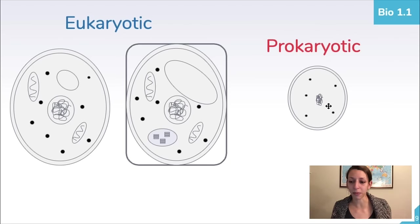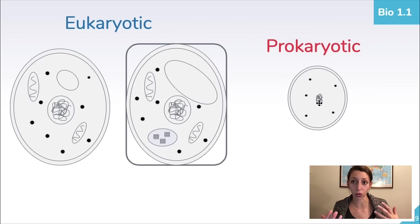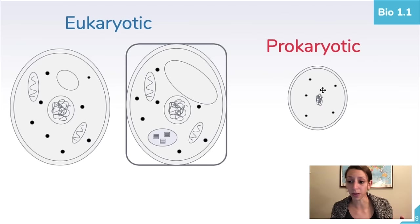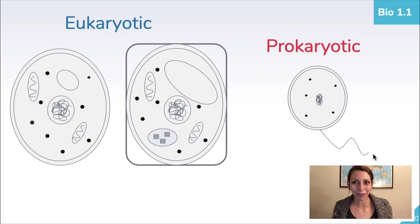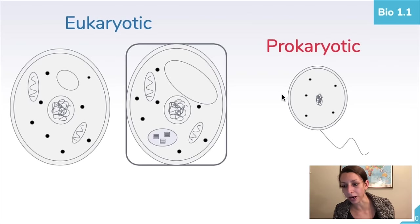In prokaryotic cells there are no membrane-bound organelles — no mitochondria, no vacuoles, and no nucleus. Instead, the DNA floats freely within the cell in a region called the nucleoid. All cells do have ribosomes for protein synthesis, and prokaryotes have a cell membrane to contain the cytoplasm. Sometimes there are external features like flagella or cilia for movement, but not all prokaryotic cells have those. So prokaryotic organisms are much more simple: no nucleus, no membrane-bound organelles.